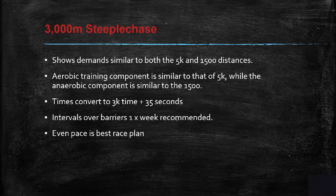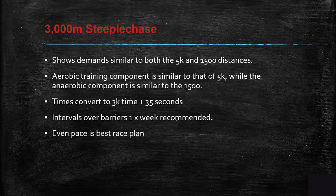The 3K steeplechase has demands similar to the 5K and 1500. Aerobic training components are similar to 5K, and times convert from a 3K time by about 35 seconds. Do intervals over barriers at least once a week. Even pace is best for race planning, and don't do too many reps over barriers — athletes need recovery. Even with high-level hurdlers, you shouldn't hurdle every day, and the same applies to steeplechasers.